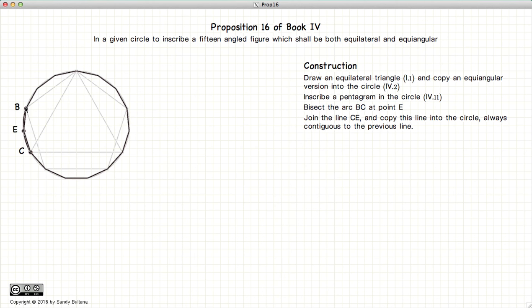From here to here, from here to here, and here and here, and so on and so forth to form a contiguous polygon. And this polygon is an equilateral, equiangular, 15-sided figure.